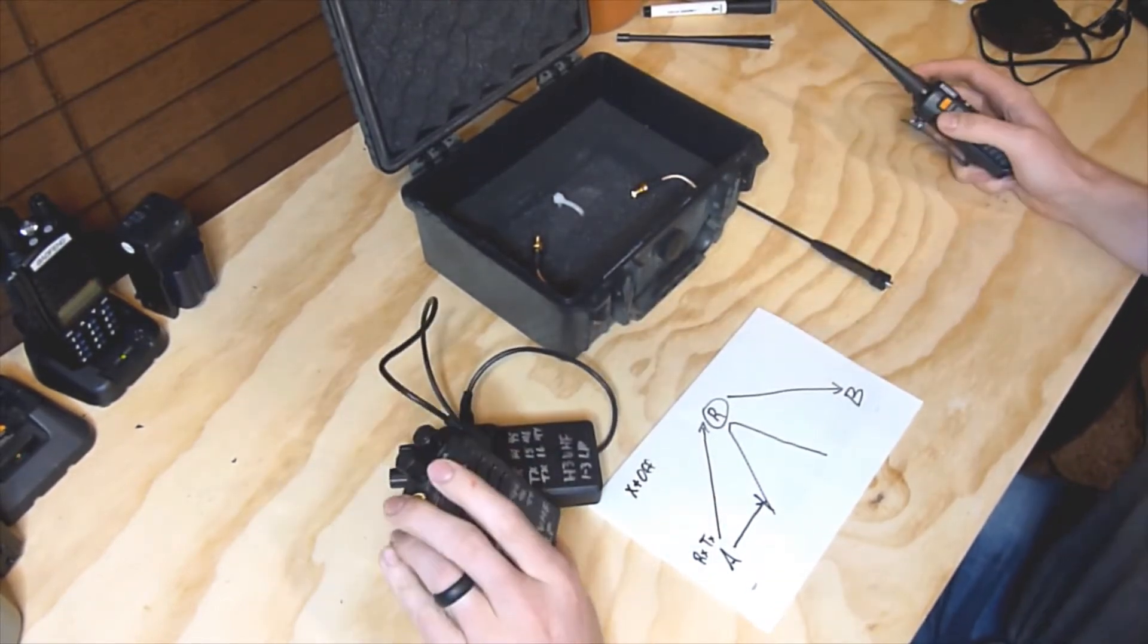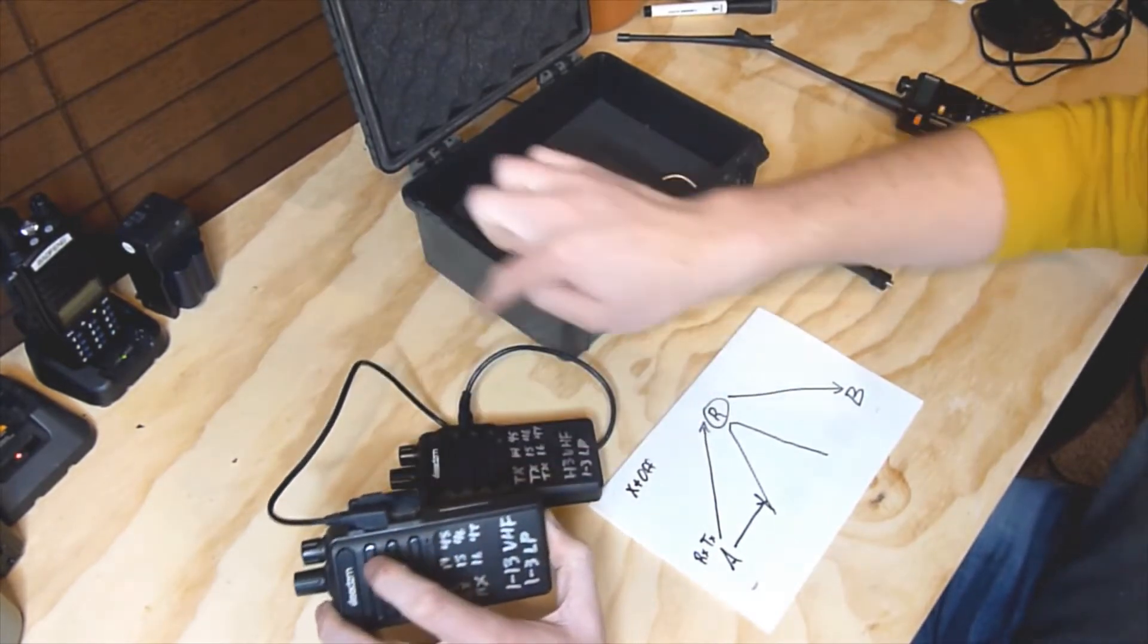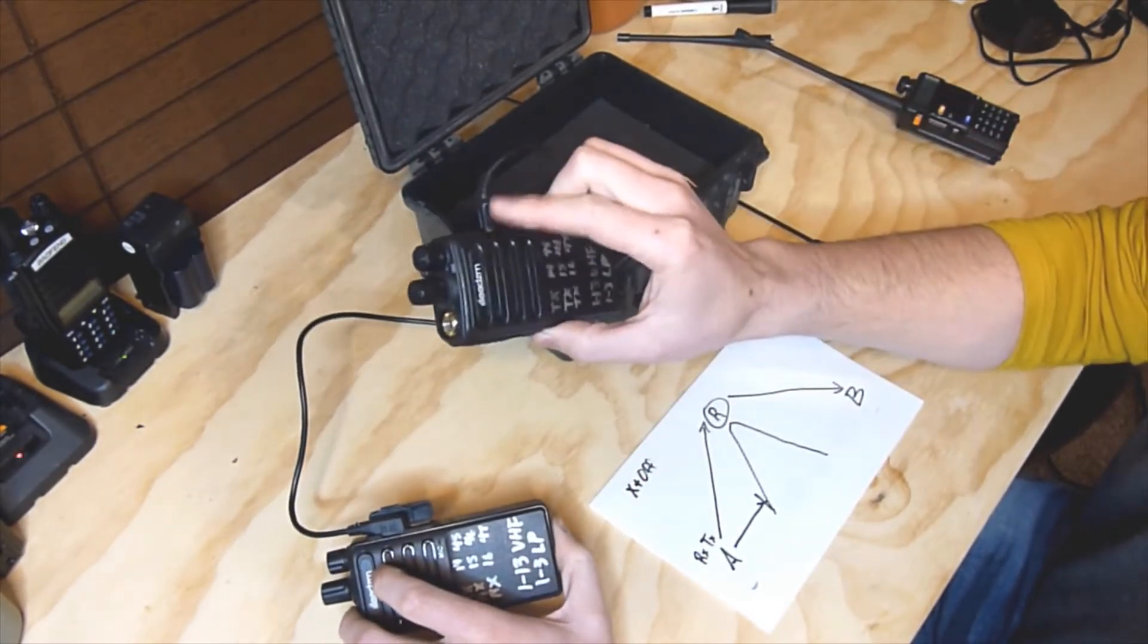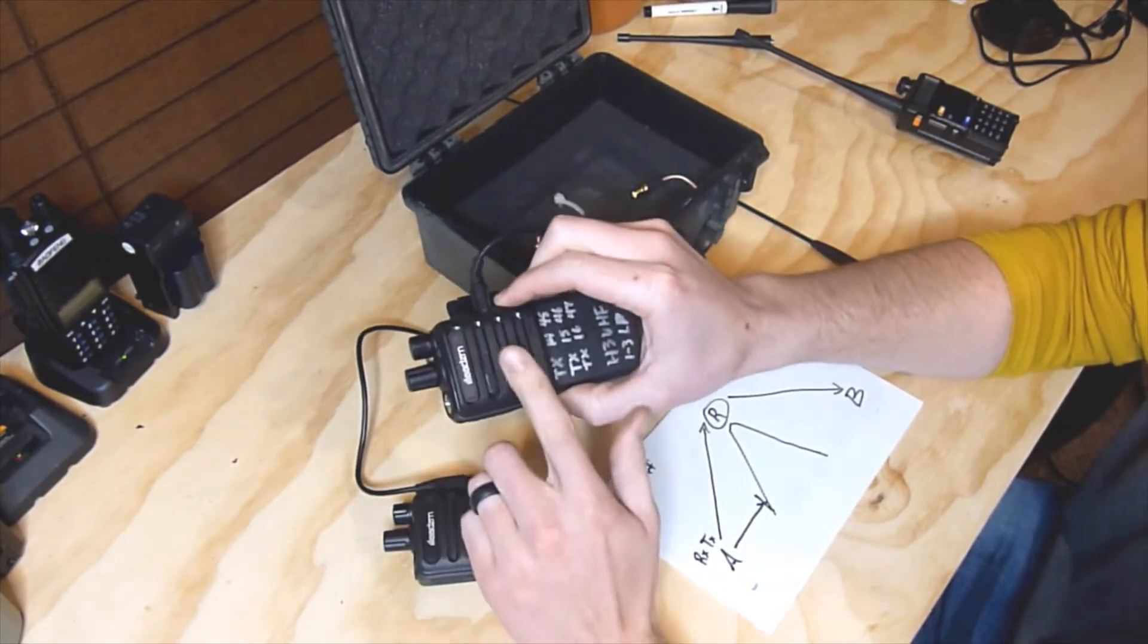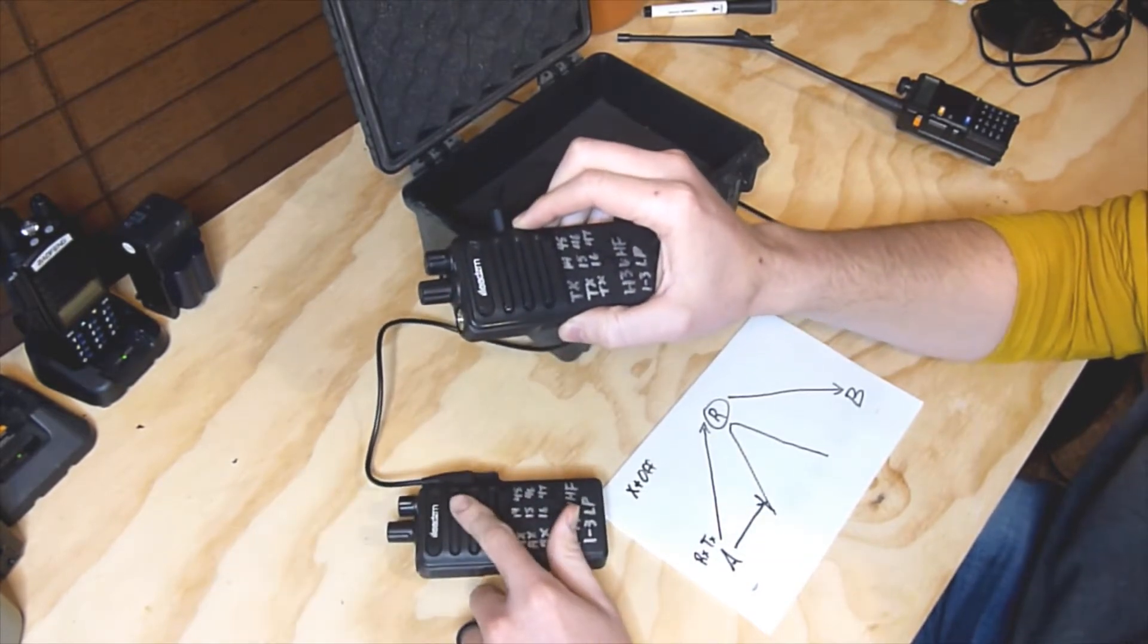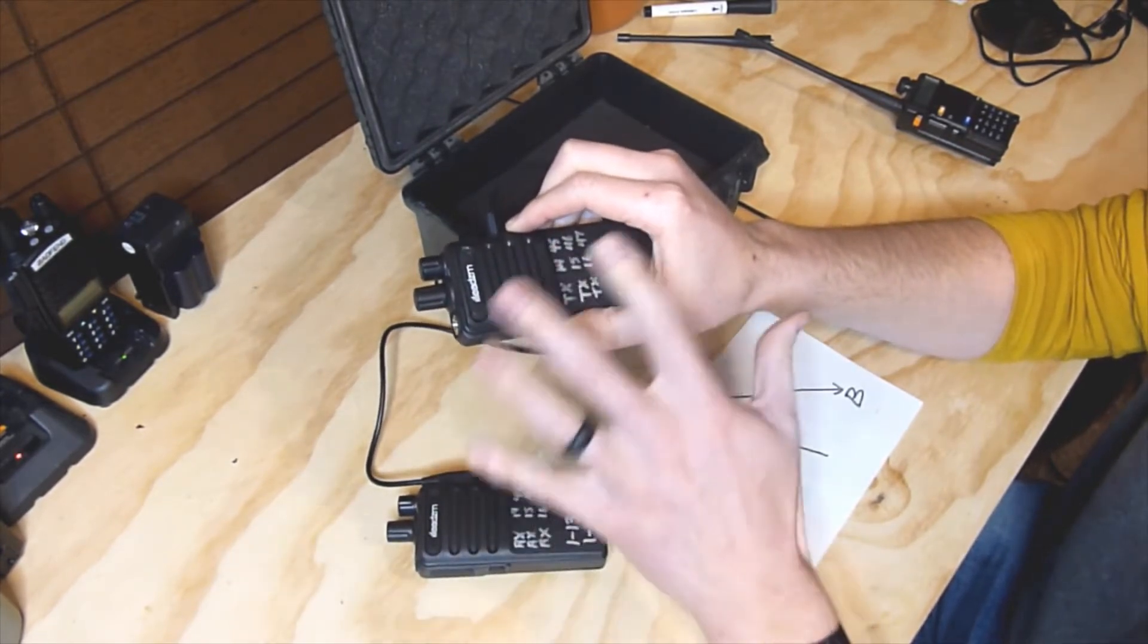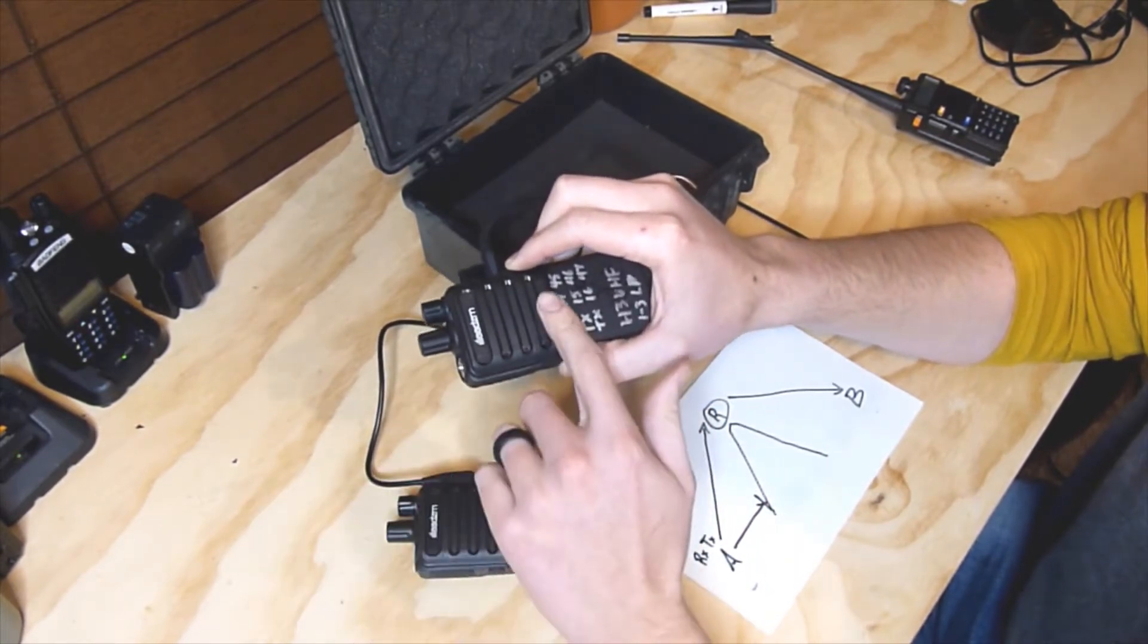So then whenever I key up, this one hears it and instead of sending it to a lapel mic, it sends it over to this radio and it receives it in the mic slot over here. You have to have the VOX turned on on your TX radio and you have to adjust the volume of your RX radio so that you cut out as much static as possible and you're still going to be able to key this one up pretty reliably.